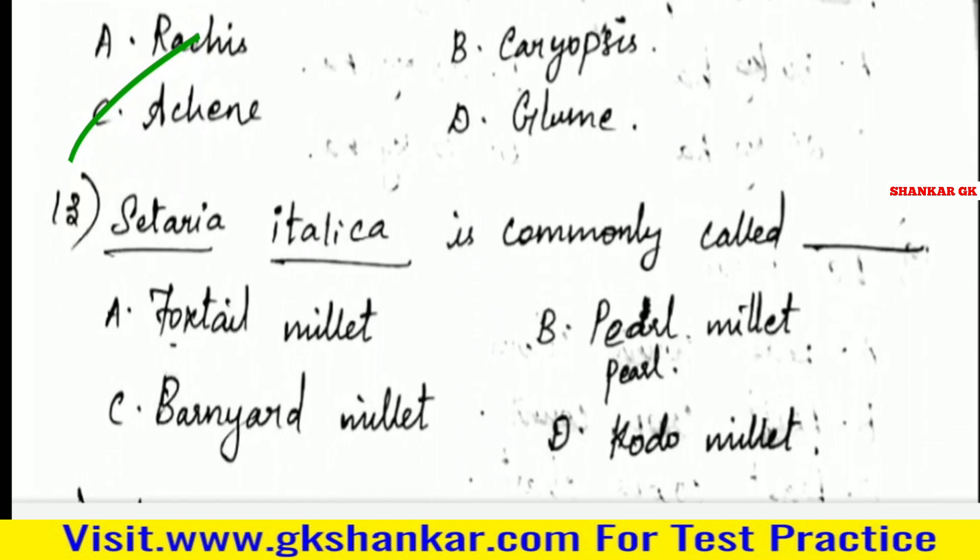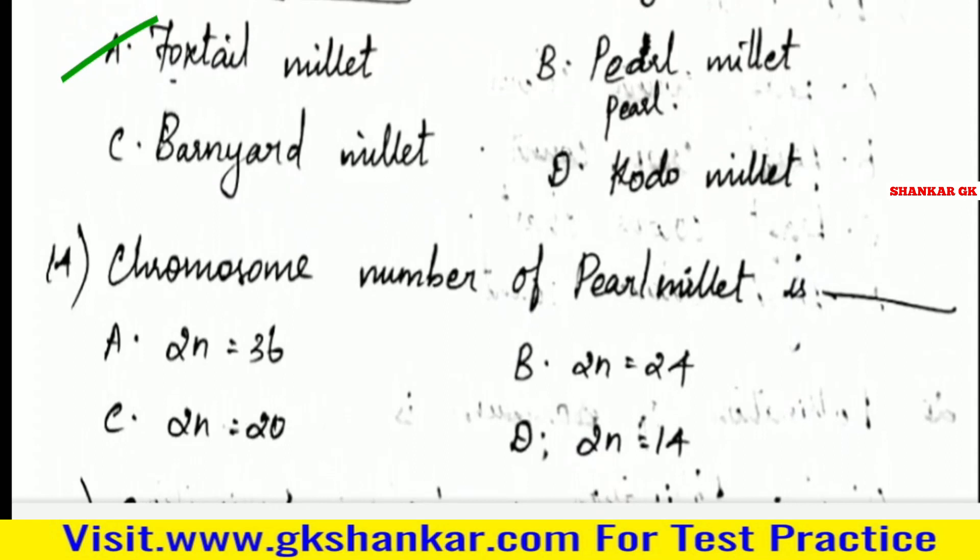Thirteenth question: Setaria italica is commonly called — A. Foxtail millet, B. Pearl millet, C. Barnyard millet, D. Kodo millet. Answer: A. Foxtail millet.